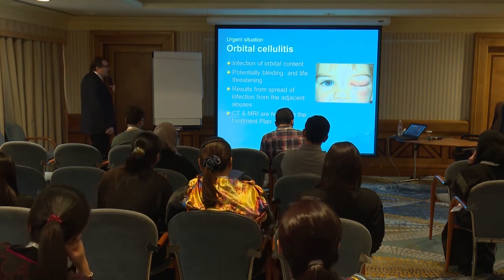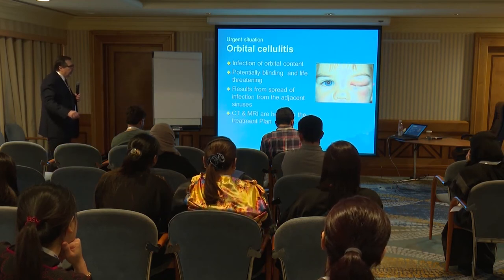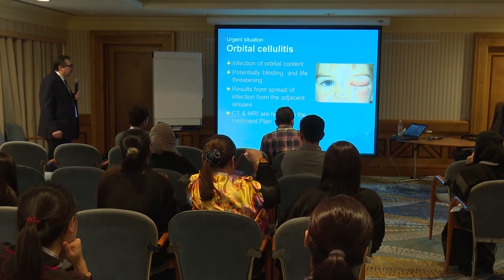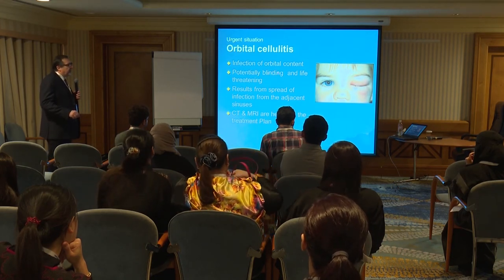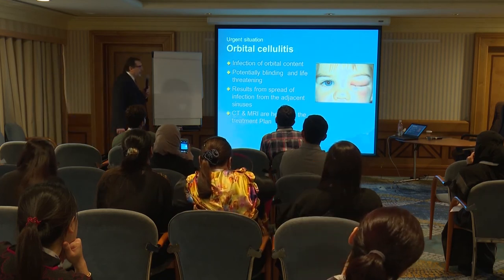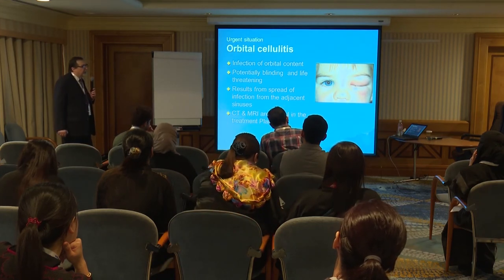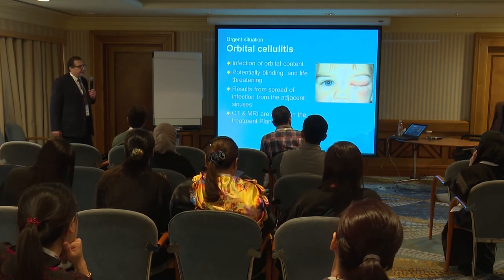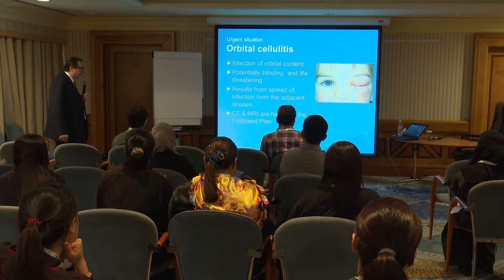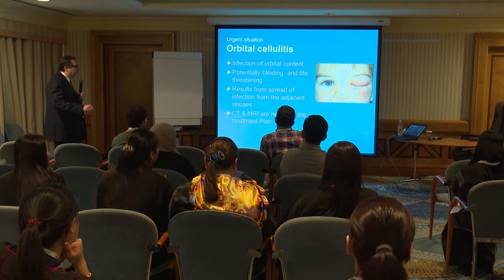Next is orbital cellulitis — infection of the orbital content, caused in most cases by bacterial infection. It is potentially blinding and life-threatening, especially in children. There are many cases of blindness from orbital cellulitis due to wrong diagnosis. It results from spread of infection from the adjacent sinuses. We need to do CT or MRI to correctly diagnose the patient and prescribe the needed antibiotics. In children, admission is necessary. In adults, we give medication and the patient can go home.